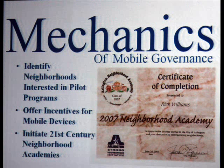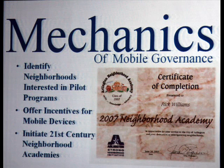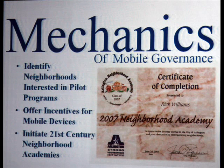There are some mechanics involved. The master capacity building and training you've all been through is one component. This is an example from Arlington, Virginia, where they developed their neighborhood academies — where folks get traditional skills and a good understanding of government. We see this in other communities too, whether it's a citizen academy or a city university. Those are places where folks can learn about government so that when they get involved and make decisions, they have a basis for understanding the role of government. Formal training is very important.